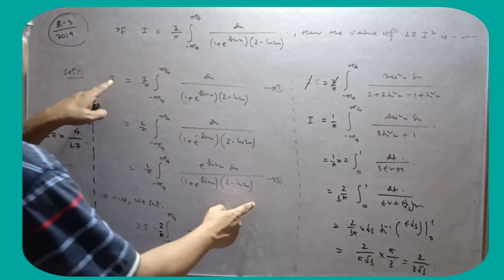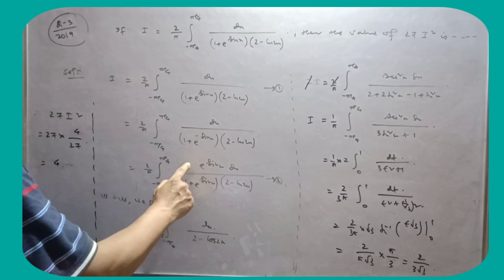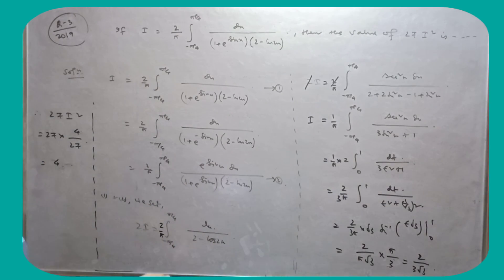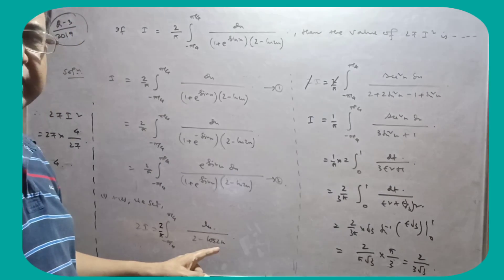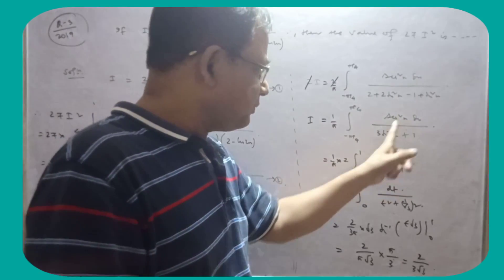So tumhe, ee dhono ko jab add karo ge. This is 1, this is 2. So tumhe numerator me, e factor me aayega, to cancel ho ga dx by this. Abhi, cos 2x ka jaga pe, tumhe kya likhna hai? 1 minus tan square x by 1 plus tan square x se likha. Tumhe ee function mila hai.